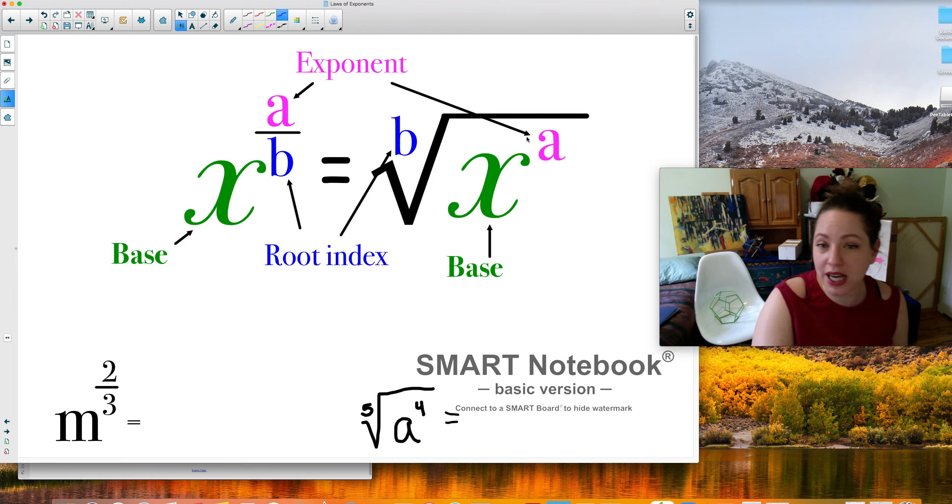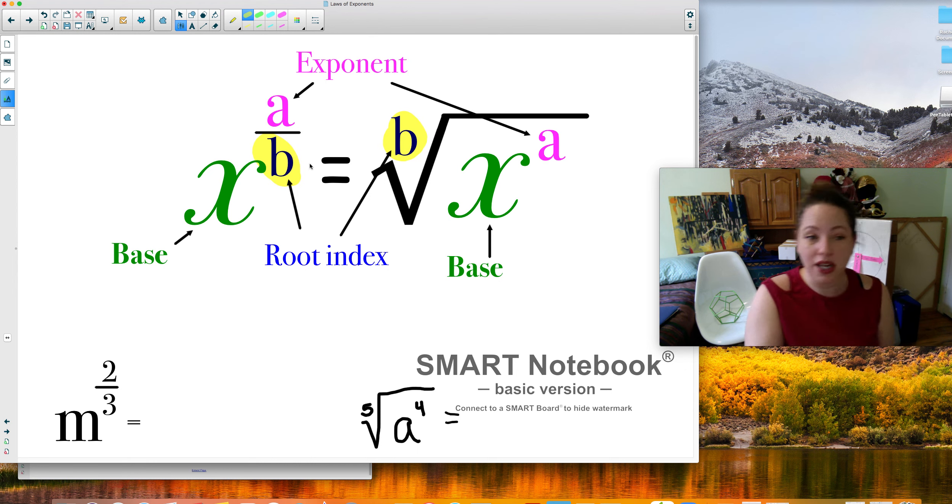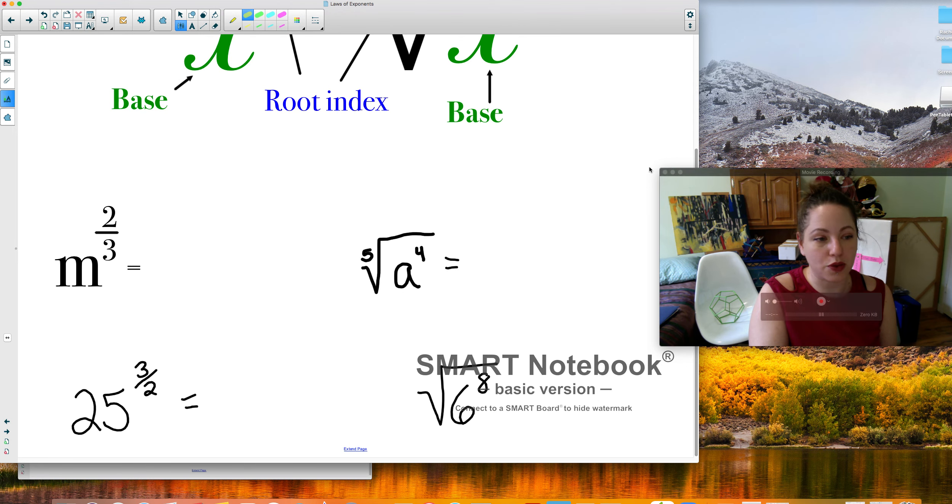So the top number is the exponent. That doesn't change. So like x to the a power is still x to the a power. But this bottom number is the key part. This right here is the root. So if the bottom was 2, it's a square root. If the bottom is 3, it's a cube root. So let's see what this looks like in actual practice.